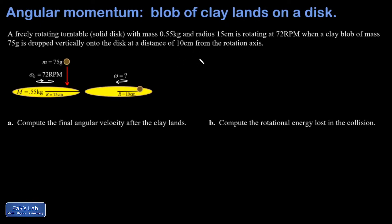First of all, let's get our moment of inertia formulas in for a disk. That's the turntable. That's one half MR squared.